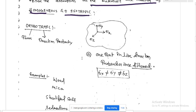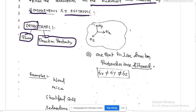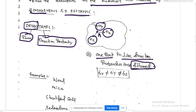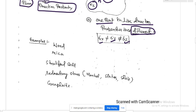Orthotropic means — 'ortho' means perpendicular — at any one point in perpendicular directions, properties are different. So at a point, the stress in the x-direction is not equal to stress in the y-direction or z-direction. Examples of orthotropic materials include wood, mica, stratified soil, sedimentary stones like marble, slates, and graphite.